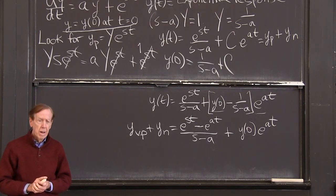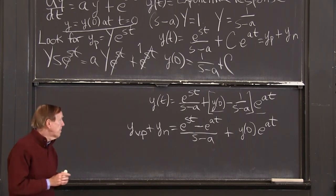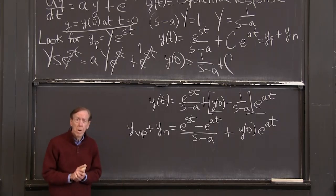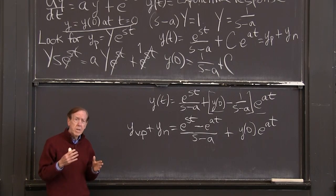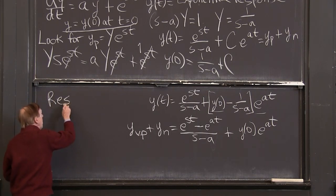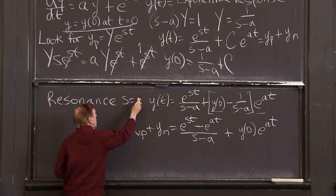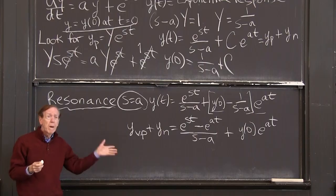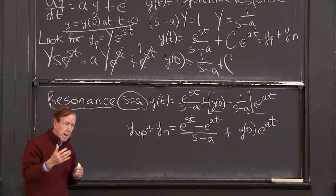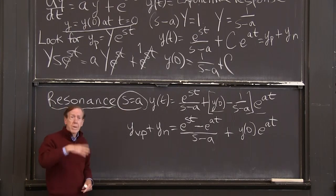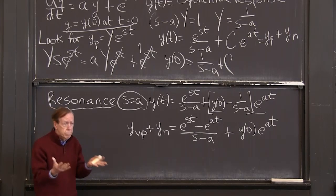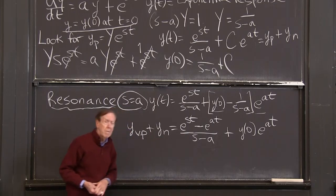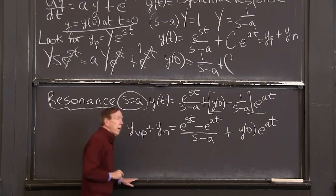The problem is solved with one exception. And now I have to take a minute with that exception. The exception is the formula breaks down if s equals a. If s equals a, I'm dividing by 0. My formula is falling apart. And that's the case of resonance. So let me put over here, when s equals a, that's resonance. And we always have to expect that that's a possibility, that we're putting money in with the same exponential as the natural growth of the money, or whatever we're growing. And our formula has to change.